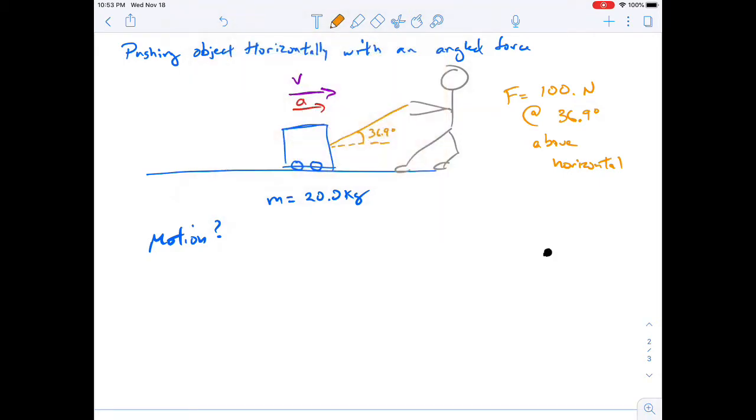If the person is pulling up at that angle, that's going to be a force up at an angle like such, and that has an angle of 36.9 degrees. That's our pulling force, and we're going to label that 100 newtons.